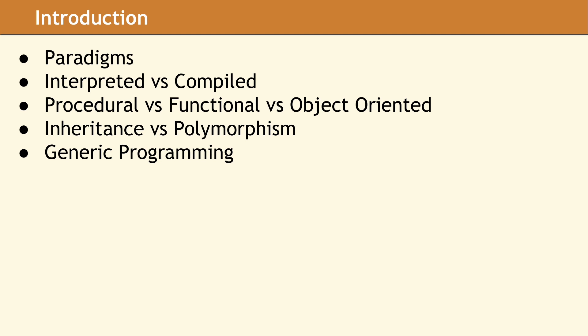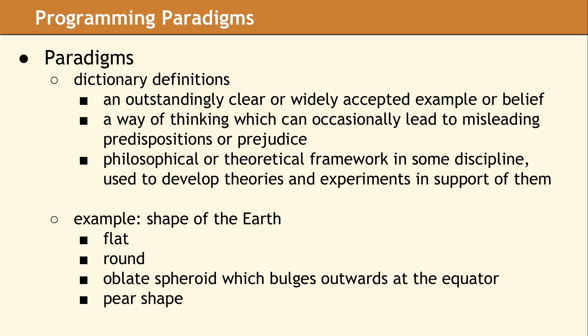C++ can be used to write object-oriented code, but it does not claim to be an object-oriented language. In fact, the language does not limit your code to using a single paradigm. We decided to look up the definition of the word paradigm in the dictionary, and discovered several different meanings.